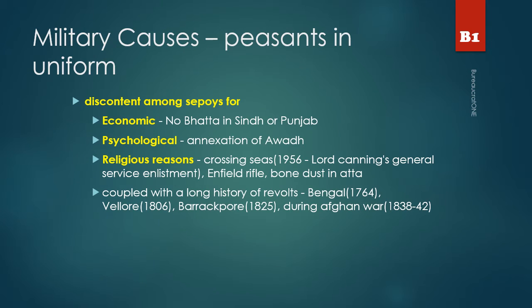Military causes: The British didn't realize that soldiers are peasants in uniform. Their new revenue settlement plan not only affected the peasants but also the soldiers. Soldiers were discontent on various fronts. On the economic front, they were not given batta when they served in Sindh and Punjab. The annexation of Awadh also affected them psychologically, because most of the soldiers came from Awadh. Hindus considered crossing of seas would make them lose their caste, but crossing of seas was made one of the service conditions by Lord Canning. Also, the use of the Enfield Rifle with cartridges greased using cow and pig fat hurt their religious sentiments.